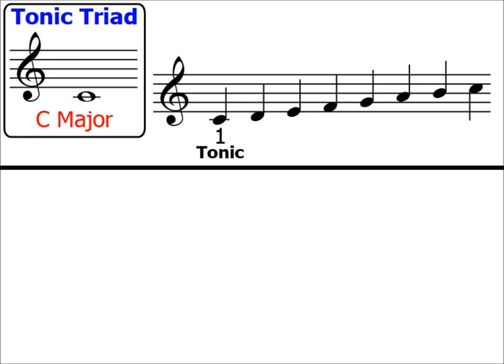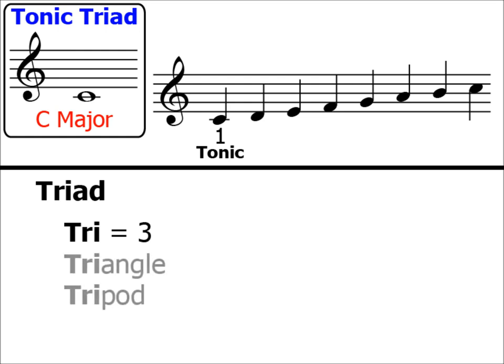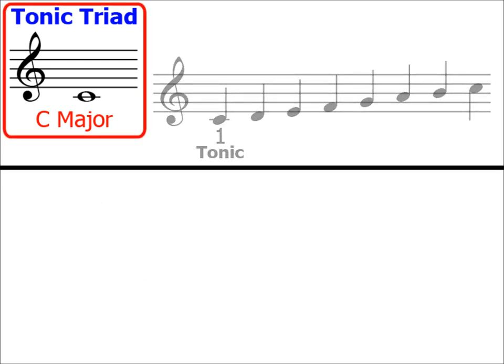Tonic means the first note of the scale. As for the word triad, you may already know that 'tri' means three, as in triangle or tripod. So the word triad gives us a handy hint that our tonic triad will consist of three notes. We've already put the tonic note C over here — tonic means the first note of the scale — so that's one of the three notes sorted.